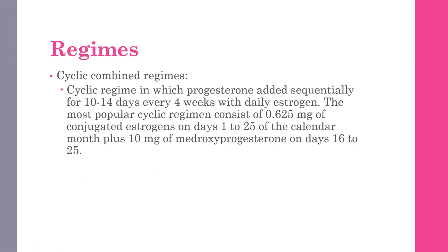The cyclic combined regime: progesterone is added sequentially for 10 to 14 days every four weeks with daily estrogen. The most popular cyclic regime consists of 0.625 mg of conjugated estrogens on days 1 to 25 of the calendar month, plus 10 mg of medroxyprogesterone on days 16 to 25 of the same month. There is no pause of the estrogen, and progesterone is given in cyclical form.